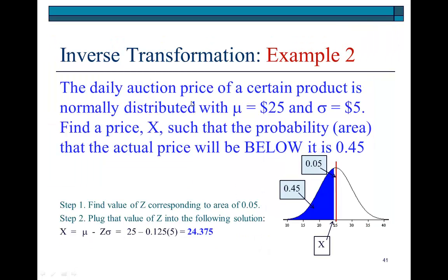Second problem says the daily auction price for certain products is normally distributed with a mean of 25 and standard deviation of 5. Alright. So same as before. But this time, find a price x such that the probability that the actual price will be below it is 0.45. So the probability that the real price will be below it this time is 0.45. So that price has to be here. Because if it is here, a point below the mean, we find that the area below it can be argued to be 0.45 since the total area on one side is 0.5.